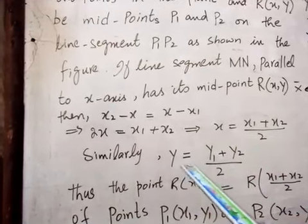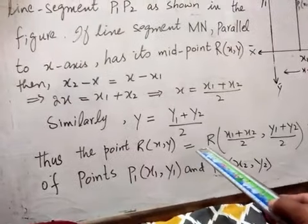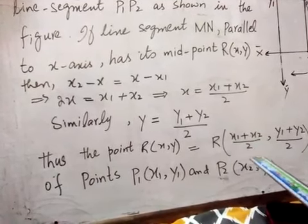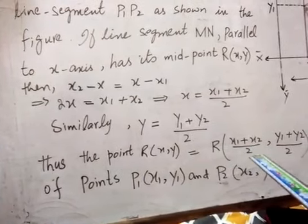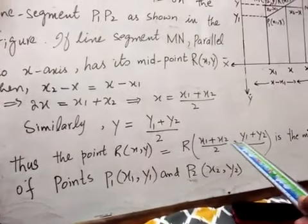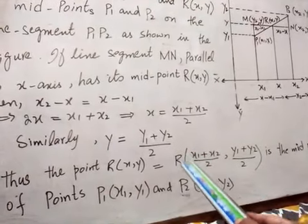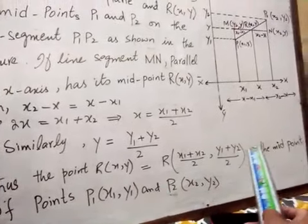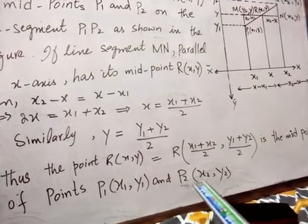So this is the y-coordinate. Thus, the midpoint R has coordinates x and y, where x equals x1 plus x2 by 2 and y equals y1 plus y2 by 2. So R is the midpoint of P1 having coordinates x1, y1 and P2 having coordinates x2, y2.